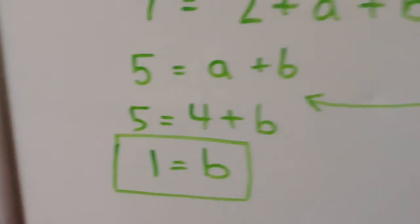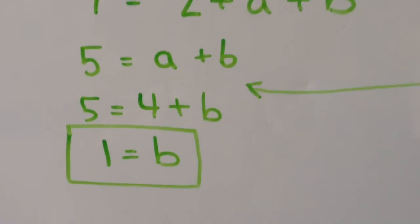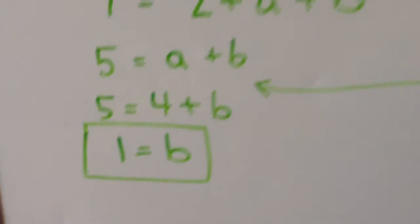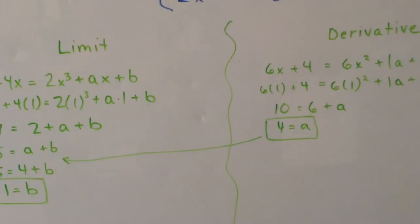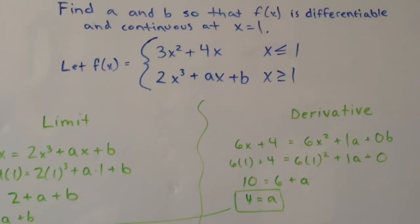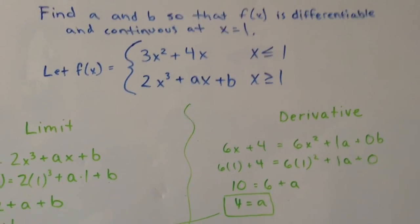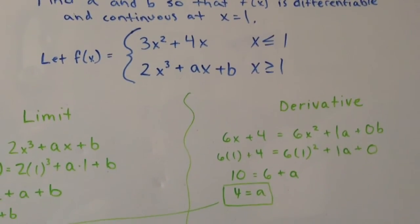I can then plug a into the equation over here and find b equals 1. And that's what a and b will be for the f of x to be differentiable and continuous at x equals 1.